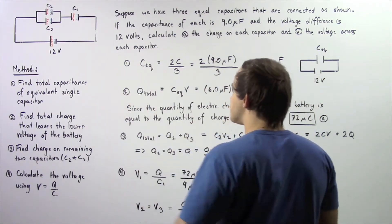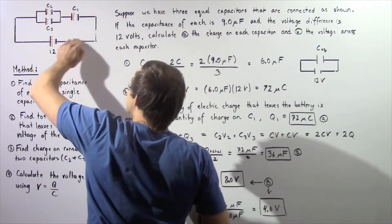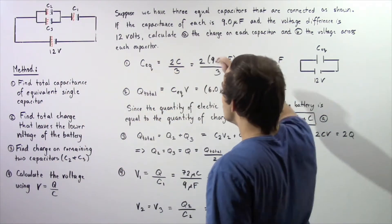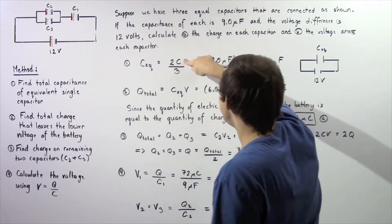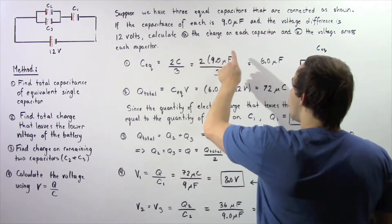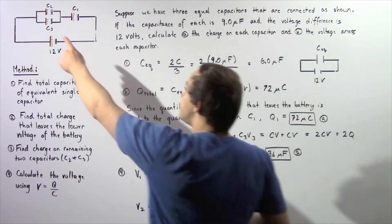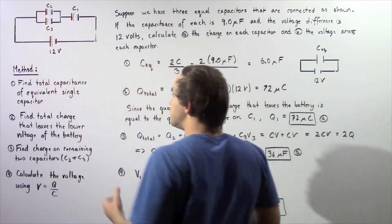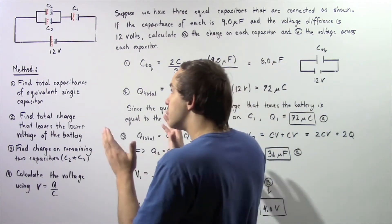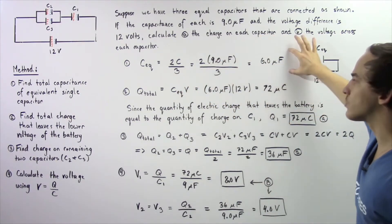In step one, combining all three capacitors as shown gives an equivalent capacitance of 2C divided by 3, where C equals 9 microfarads. Two multiplied by 9 divided by 3 gives us 6 microfarads. So the equivalent single capacitor that carries the same charge across the same voltage has a capacitance of 6 microfarads.